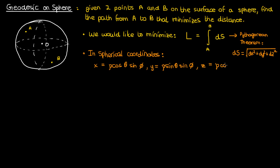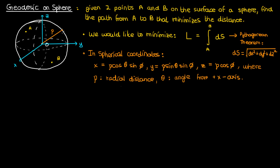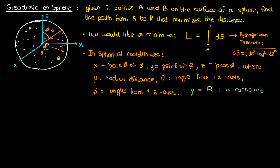We can express x, y, and z in terms of the radial distance rho, the angle relative to the positive x-axis that I'll call theta, and the angle relative to the positive z-axis that I'll call phi. Now since we're on the surface of the sphere, the radial distance rho is just a constant capital R, where capital R is the radius of the sphere. So we'll replace all the rho's by capital R. Our length differential ds is in terms of dx, dy, and dz, but since we're using spherical coordinates, we need to convert these differentials and write them in terms of d theta and d phi.